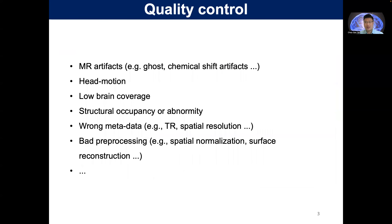Quality control is a very important step in data analysis. There are many different artifacts like motion artifacts, ghosts, chemical shift, and we can also have high motion in fMRI data. When scanning, you may have low brain coverage, and also there might be structural occupancy or abnormality, or you can have wrong metadata like TR, spatial resolution, reconstruction, and even bad pre-processing like spatial normalization and surface reconstruction.